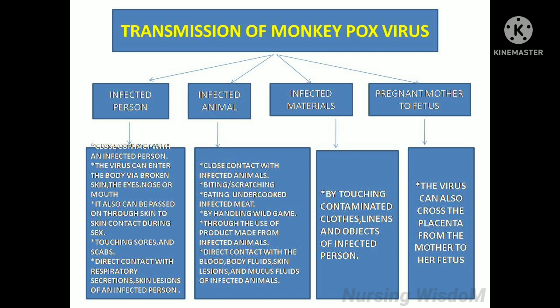From infected animals to humans: transmission occurs by close contact with infected animals through biting, scratching, eating undercooked infected meat, handling wild game, using products made from infected animals, or direct contact with the blood, body fluids, skin lesions, and mucous fluids of infected animals.